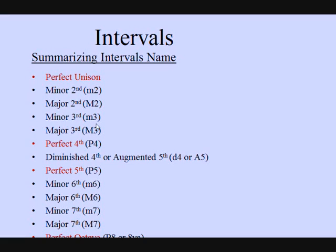As you can see, what we were saying before is that the second, third, sixth, and seventh go through minor and major versions. But the perfect unison, the perfect fourth, perfect fifth, and perfect octave don't actually have a major or minor version.